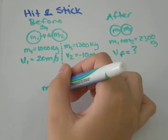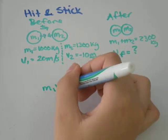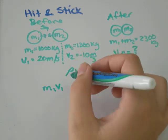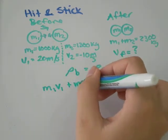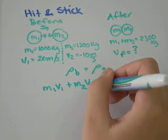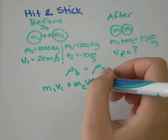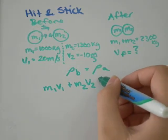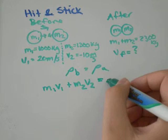So you're going to take the mass of the first times the velocity of the first equals the momentum of the first, plus the mass of the second times the velocity of the second equals the momentum of the second. And that's going to equal our momentum after.